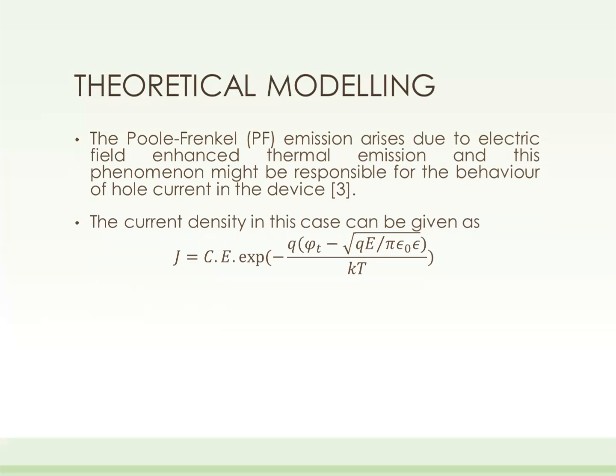phi_T is the barrier height for charge carrier emission from the trap states, epsilon is the relative dielectric permittivity of the HDL layer, epsilon-naught is the permittivity of free space, T is absolute temperature, and K is the Boltzmann constant.